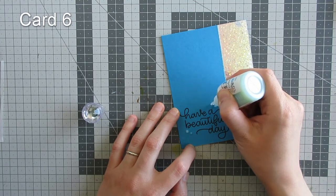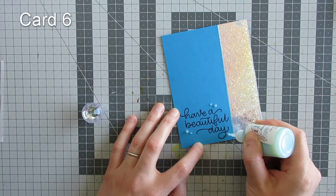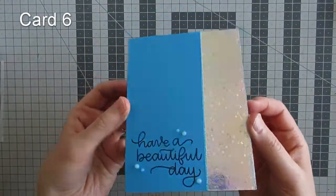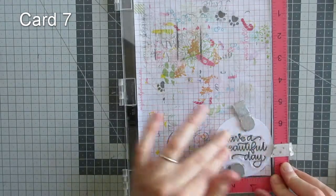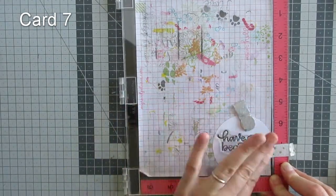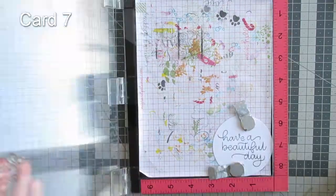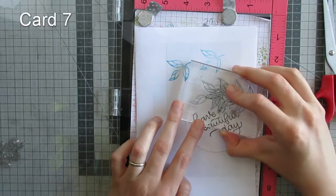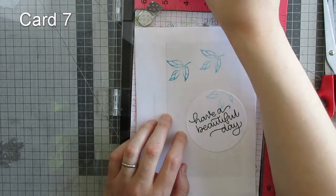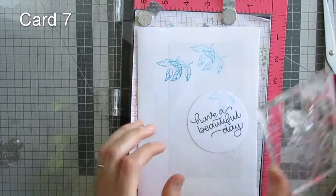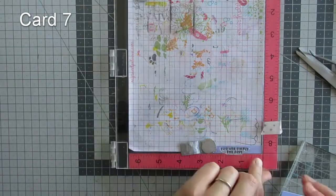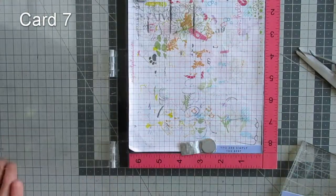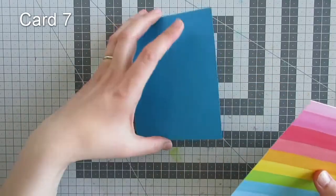For card number seven, I started by die cutting a circle of white card using a Sizzix circle die. I measured this against my sentiment, stamped the sentiment into the center, and then did some third-generation stamping using both of the oxide inks, the blue and the yellow, stamped all around the circle. I also ink blended around the edges of the circle with the yellow.